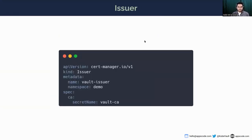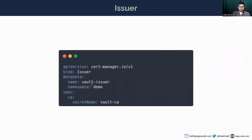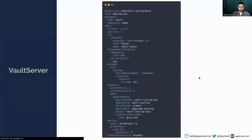Before deploying the vault server, here are some CRDs you should be familiar with. The first is the issuer. For our vault server, we're going to deploy with cert-manager-managed TLS. For that, we'll need to create an issuer, and we'll need a secret - which is the vault CA - that I've already created. I'll show that in a while. I've given the issuer name and namespace here. And here is the most important part: the vault server YAML.